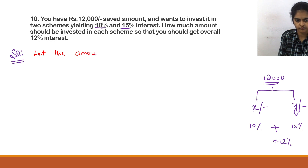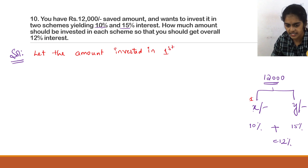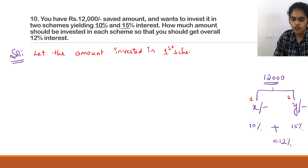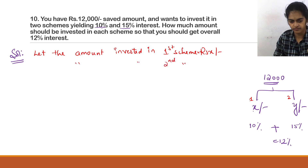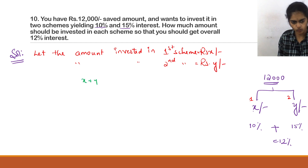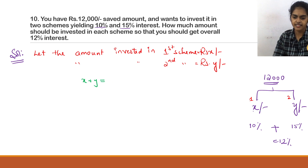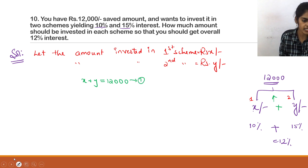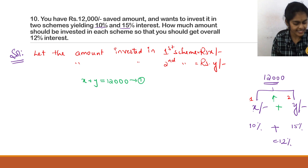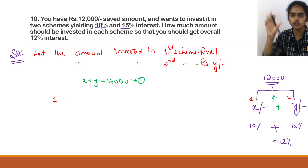Let the amount invested in the first scheme be x rupees and in the second scheme be y rupees. Total: x + y = 12,000. This is equation 1. First scheme interest plus second scheme interest should give 12% overall.